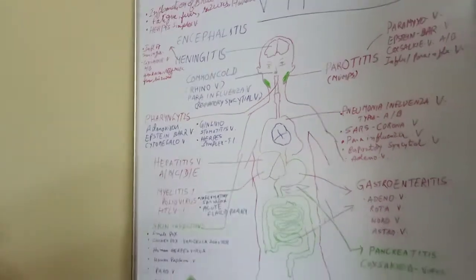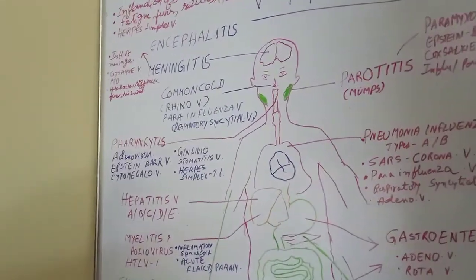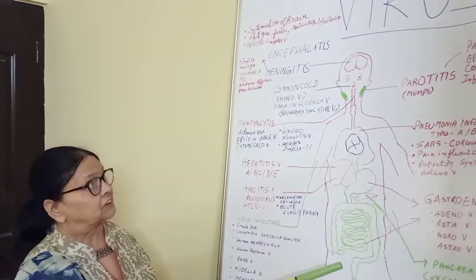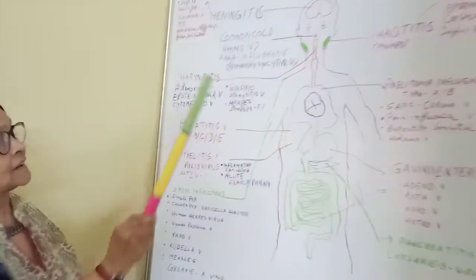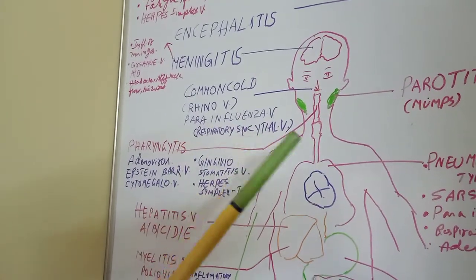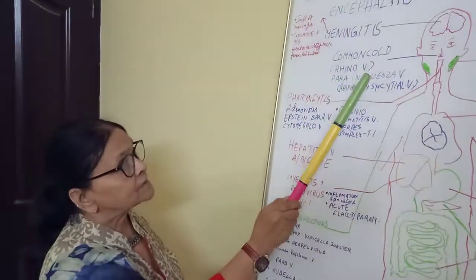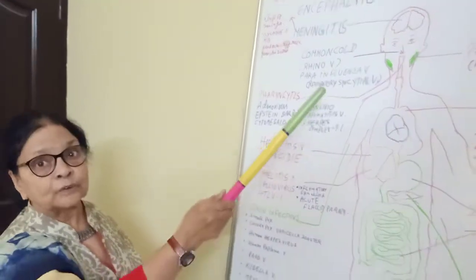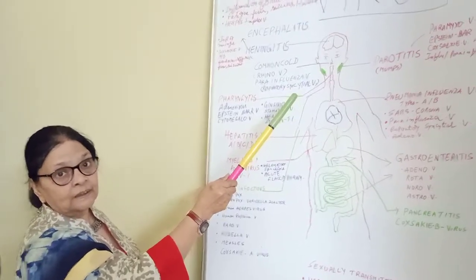Coming to nasal viral diseases. SARS is a nasal as well as upper respiratory tract viral infection. Common cold is caused by rhinovirus. Other nasal viral diseases include parainfluenza, caused by parainfluenza virus, and respiratory syncytial virus. Common cold symptoms include running nose and sneezing.